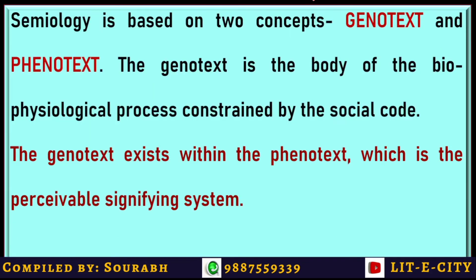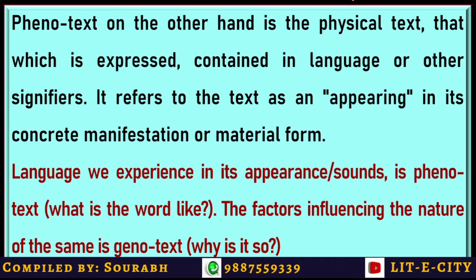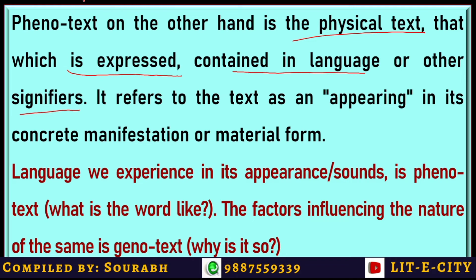When meaning is a signifying process, the sign is free to acquire multiple meanings. Kristeva's semiology is based on two concepts: Genotext and Phenotext. In very simple terms, Genotext is the body of biophysiological processes that are constrained by the social code — how society basically controls the biophysiological process, as reflected in the text. This Genotext actually exists within the Phenotext, which is the signifying system. So Phenotext is the higher level and Genotext is the physical level. Phenotext is what Genotext allows us to write — it is basically words written on the page.